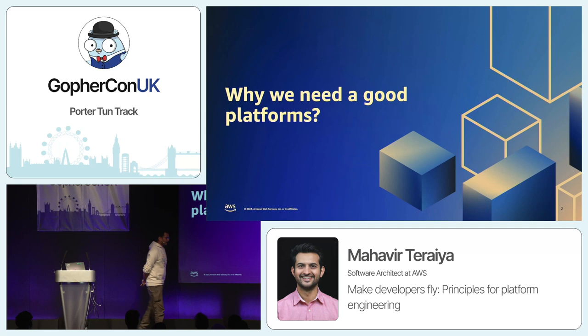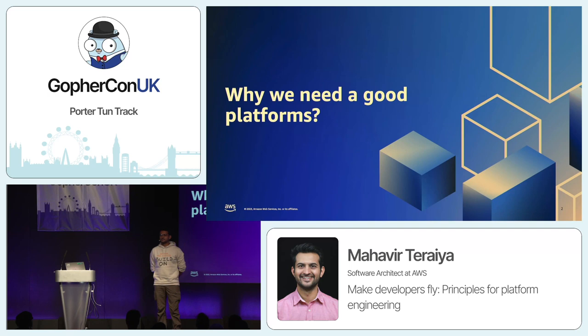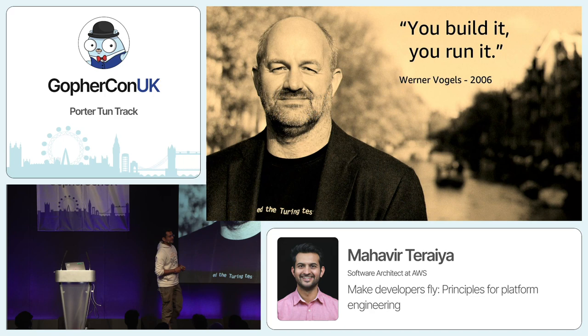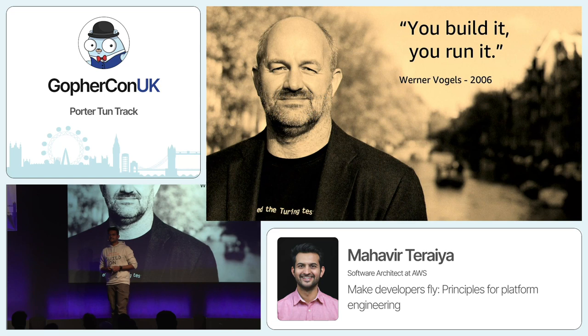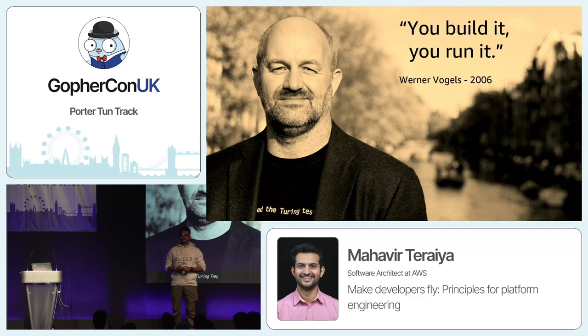If we try to understand why we need platform engineering, we need to look at how we traditionally build, develop, and deploy software. Generally, software developers develop the software and then throw it over the fence and forget about it. These models create friction because it's very hard to assign ownership, and the context of the end consumer stays very far from the main developer. This model is not followed at Amazon. Our CTO, 18 years back, stated 'you build it, you run it,' keeping the developer very close to the business so they understand the whole context — and this also improves the quality of their software.